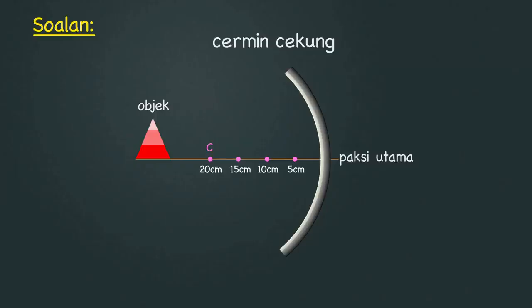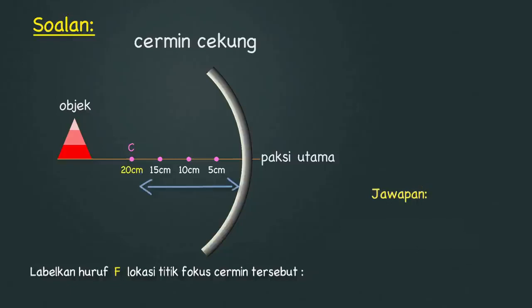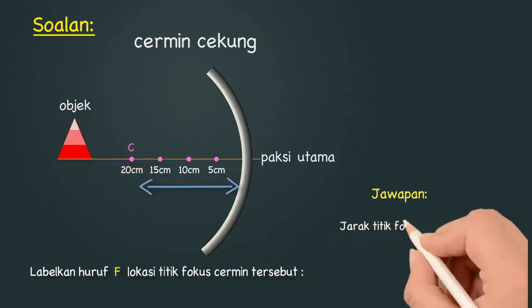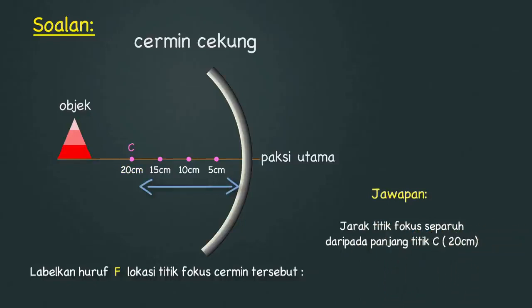Rajah menunjukkan objek terletak di hadapan sebuah cermin cekung. Titik C adalah pusat kelengkungan cermin tersebut. Pada rajah ini, labelkan dengan huruf F lokasi titik fokus cermin tersebut. Jawapan: Panjang titik C daripada cermin ialah 20 cm. Maka, jarak titik fokus adalah separuh daripada 20 cm, iaitu pada kedudukan 10 cm.